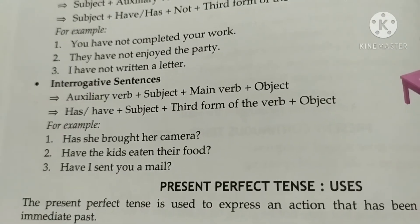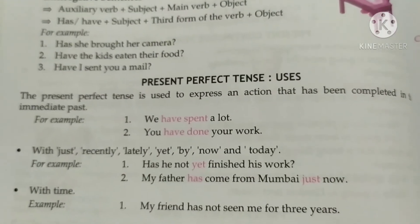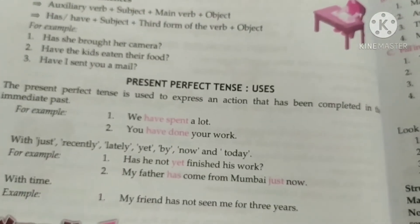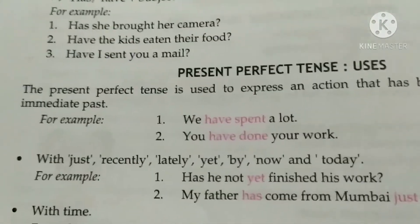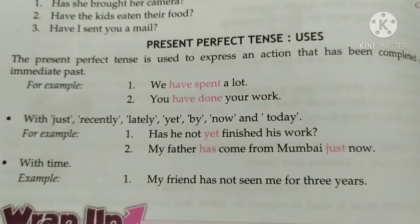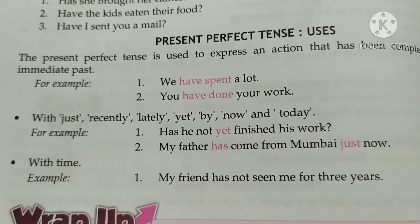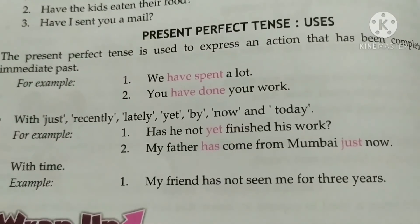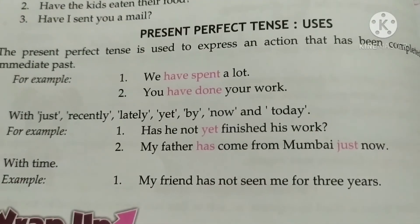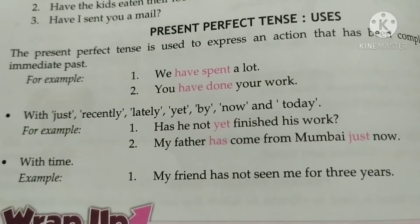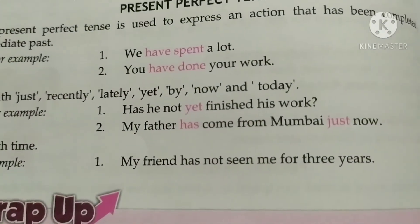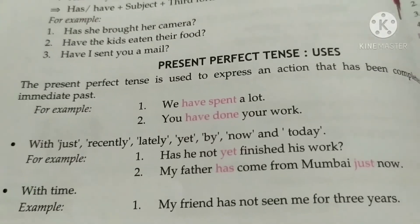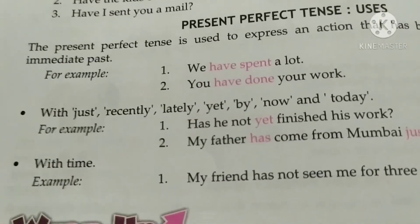Present perfect tense is used to express an action that has been completed in the immediately past. Example: 'We have spent a lot,' 'You have done your work.' Key time words used with this tense: just, recently, lately, yet, by now, today. Examples: 'Has he not yet finished his work?' 'My father has come from Mumbai just now,' 'My friend has not seen me for three days.' This tense expresses actions completed immediately in the past.